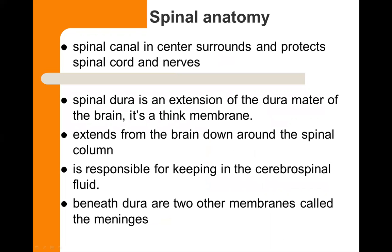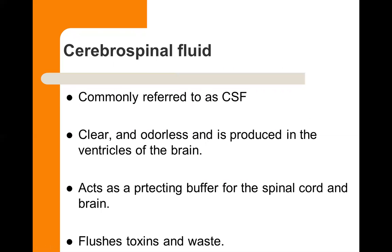Beneath the dura there are two other membranes called meninges. CSF is clear and odorless, produced in the ventricles of the brain. It acts as a protecting buffer for the spinal cord and the brain, and it flushes toxins and waste. We do spinal taps to get CSF. Think back to our neuromuscular disease patients — what were we testing for in their cerebrospinal fluid?